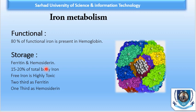Therefore, iron is bound to protein and stored in the body in two different forms: ferritin and hemosiderin. The storage iron can be readily mobilized whenever there is an increased requirement of iron, as may occur after blood loss. Two-thirds of the iron is stored as ferritin while one-third is hemosiderin.